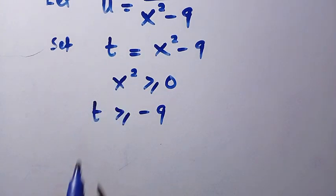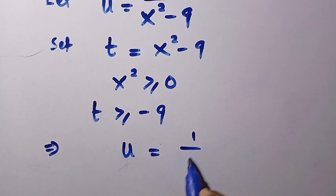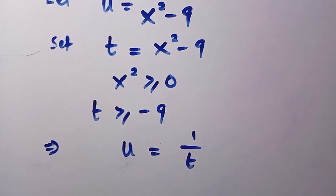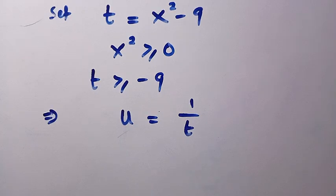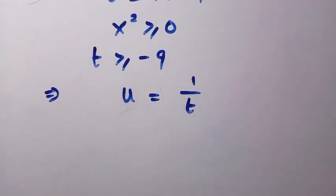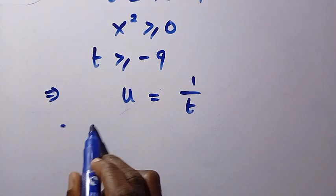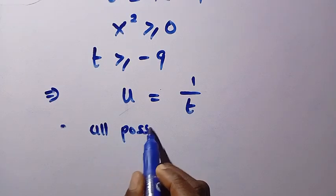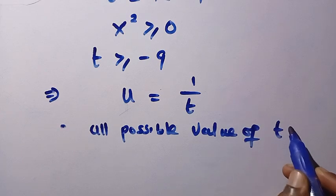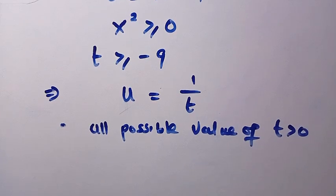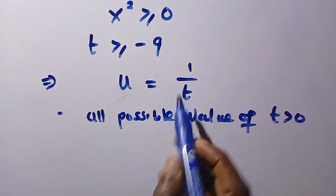We come back to where we let u. That becomes u equals 1 divided by t. If u equals 1 divided by t, let's define the domain of this well. All possible values of t: the first condition is all values of t greater than 0. It means t equals 0 is not included, but all positive values satisfy this.